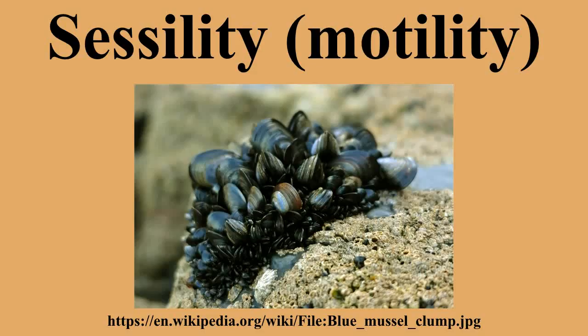Clumping is a behavior in sessile organisms in which individuals of a particular species group close to one another for beneficial purposes, and can be seen in coral reefs and cochineal populations. This allows for faster reproduction and better protection from predators.